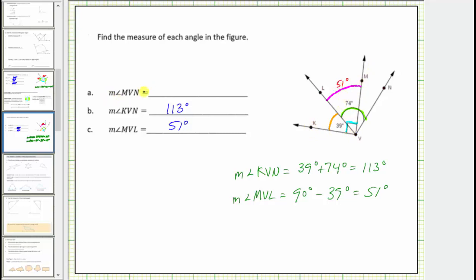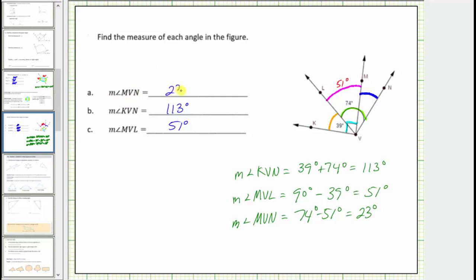Now let's go back to part A and determine the measure of angle MVN. Notice how the measure of angle LVM plus the measure of angle MVN must equal the measure of angle LVN, which is 74 degrees. Therefore, the measure of angle MVN must equal 74 degrees minus 51 degrees, which equals 23 degrees.